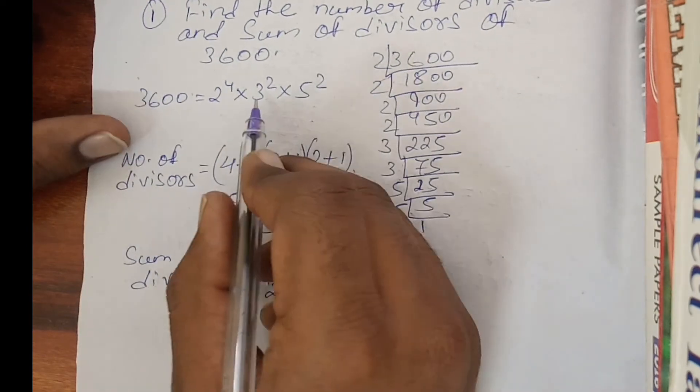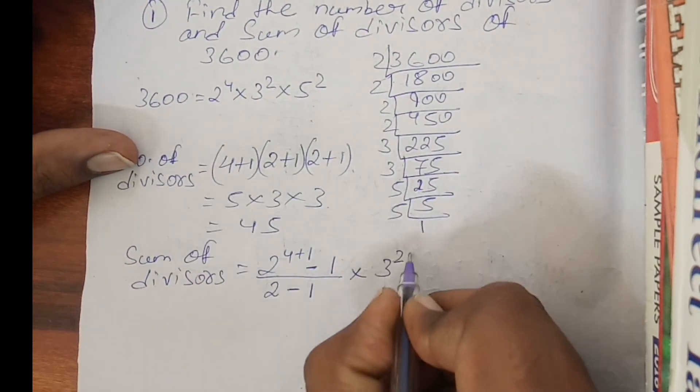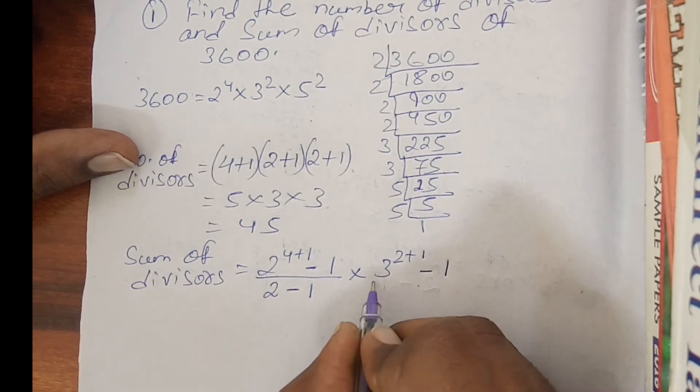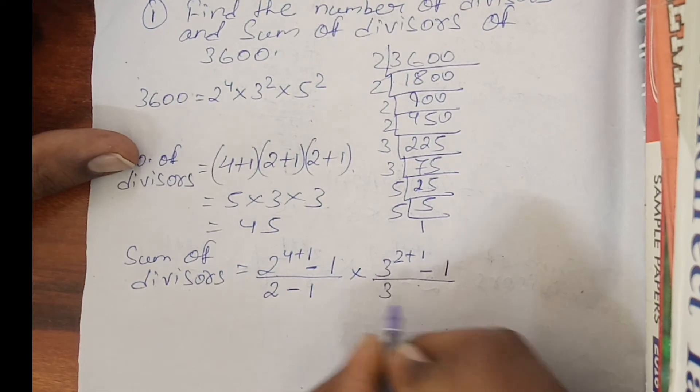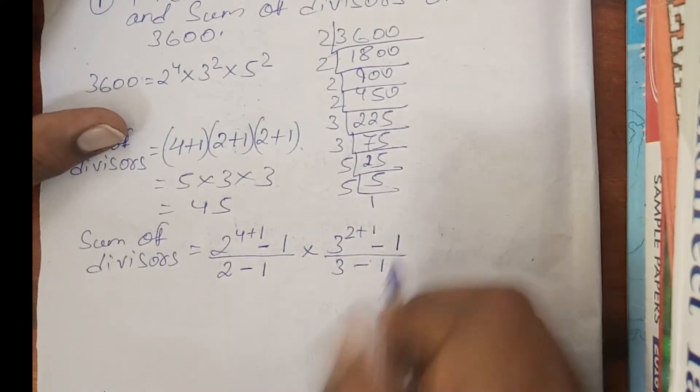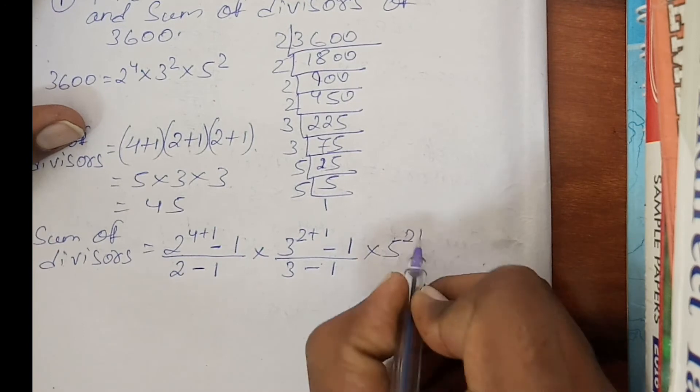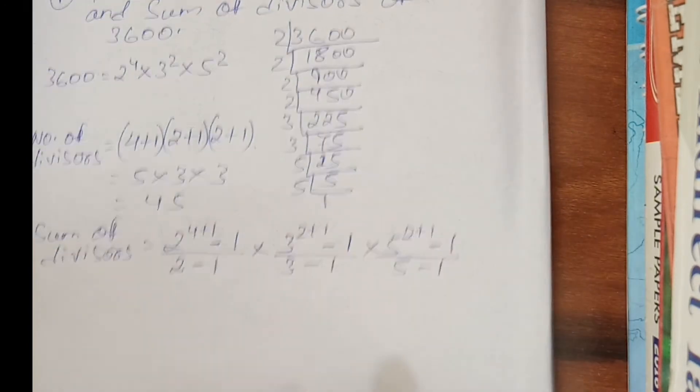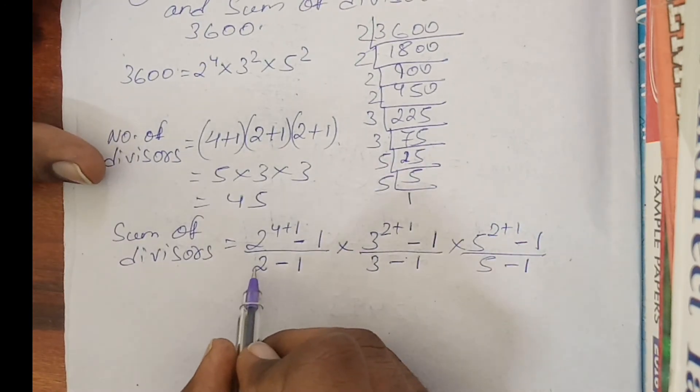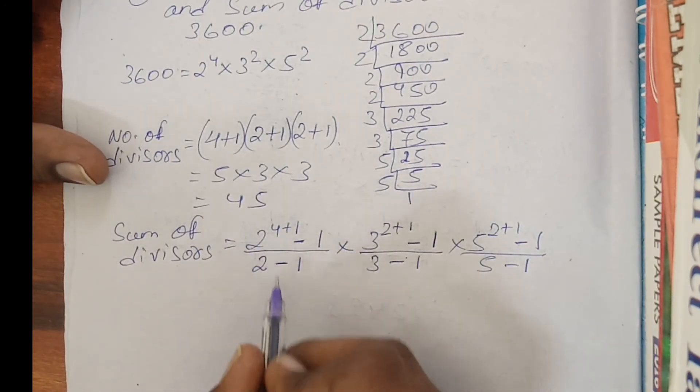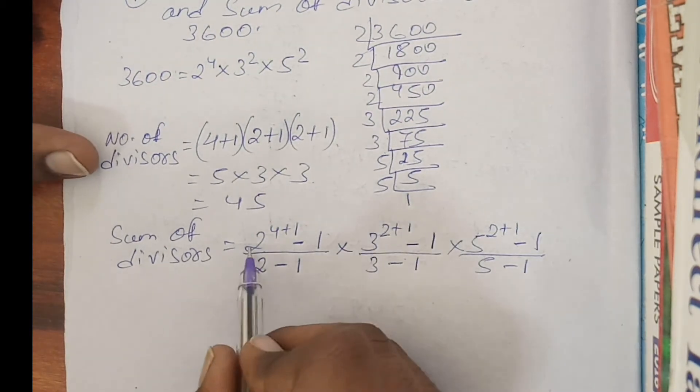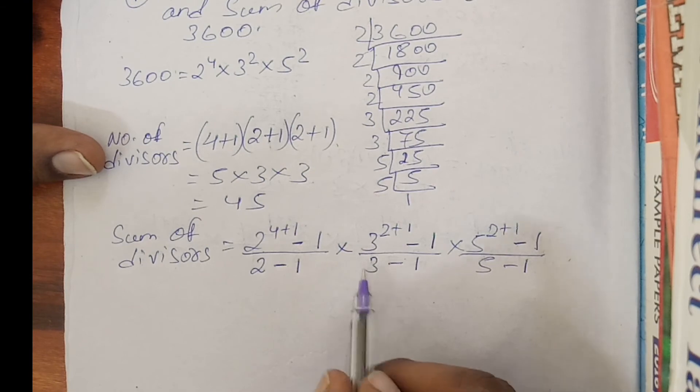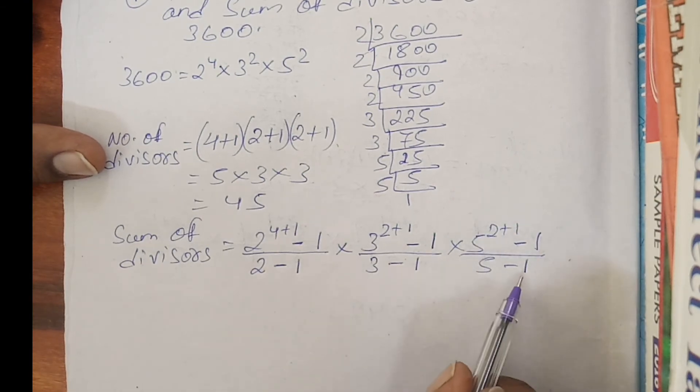Times second is 3 squared. So 3 to the power 2 plus 1, subtract minus 1 from the number. Now this is 3, so 3 minus 1. Times 5 to the power 2 plus 1 minus 1, so 2 plus 1 minus 1 by 5 minus 1. In the denominator you have to subtract the base number with 1. Here the base number is 3, you subtract 1. Here the base number is 5, you subtract 1.